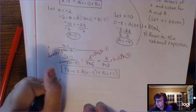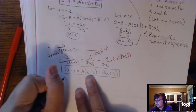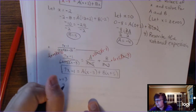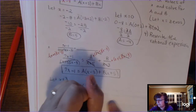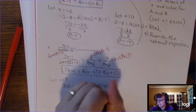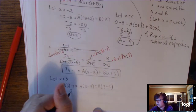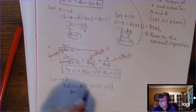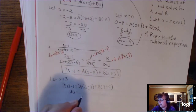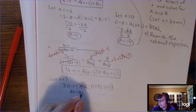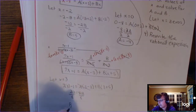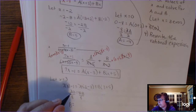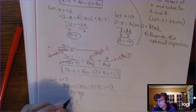Let x equal the zero from x minus 3, which is 3. Plugging 3 into the left side and right side: 21 minus 1 is 20; 3 minus 3 is zero, so the A term is gone; 3 plus 5 is 8, so I have 8B. Divide by 8. Leave this as an improper fraction — 4 goes into 20 five times, 4 goes into 8 twice, so B is 5 halves.